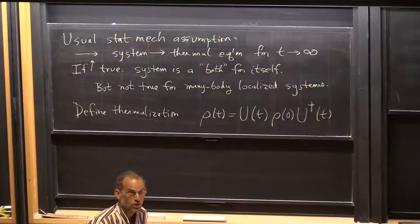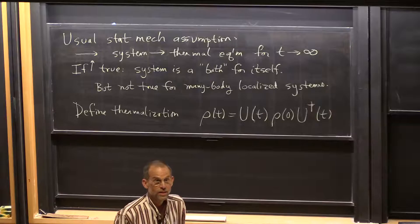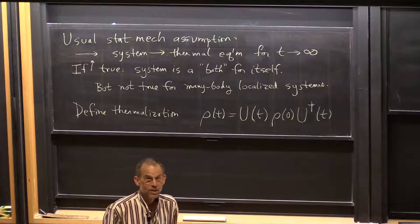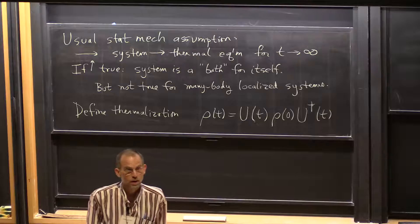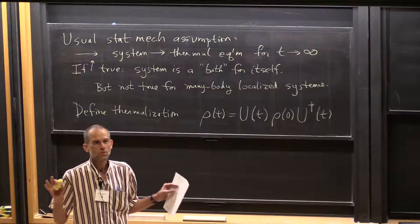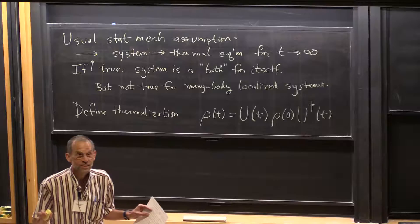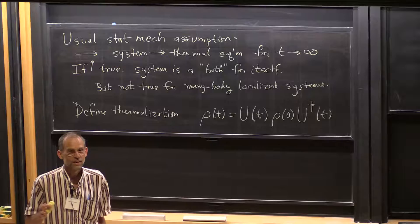In the case of integrable, conventional integrable systems, exactly-solvable systems or non-interacting systems, then it would go to the generalized Gibbs ensemble. But I want to leave those out. I want to today talk about systems that don't have any special properties — they're not integrable, they are interacting. Nothing has been fine-tuned to make the system special.